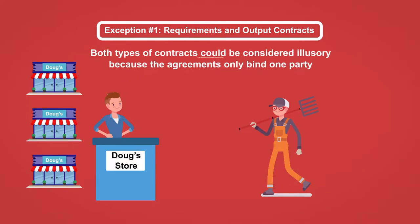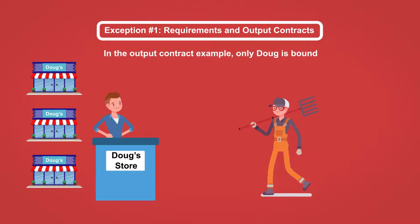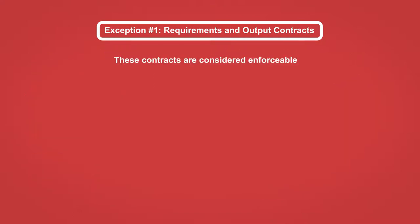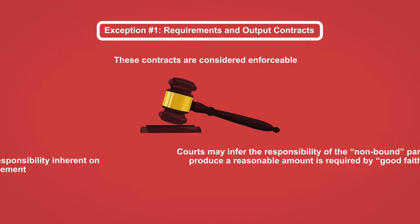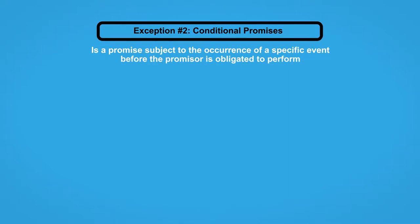Both types of contracts could be considered illusory because the agreements only bind one party. In the requirements contract example, only Ben is bound — theoretically, Doug could fail to demand a single order. In the output contract example, only Doug is bound — theoretically, Ben could fail to produce any yogurt. Nevertheless, these contracts are considered enforceable. Courts may infer the responsibility of the non-bound party to produce or consume a reasonable amount as required by good faith, which is an implicit responsibility inherent on every party to an agreement.